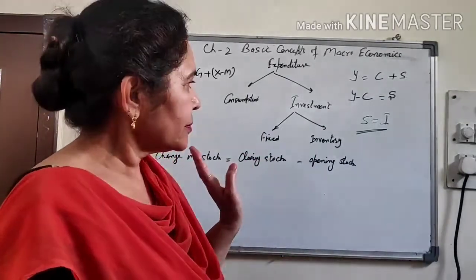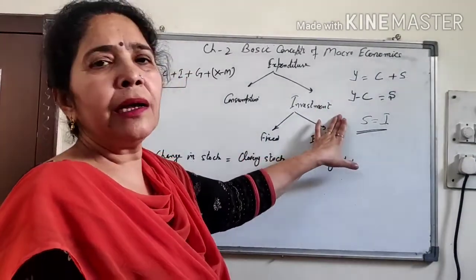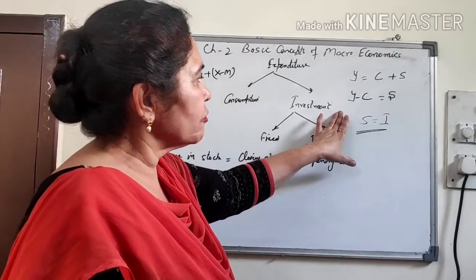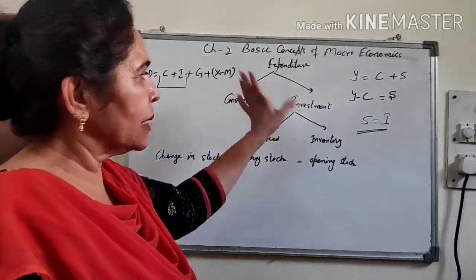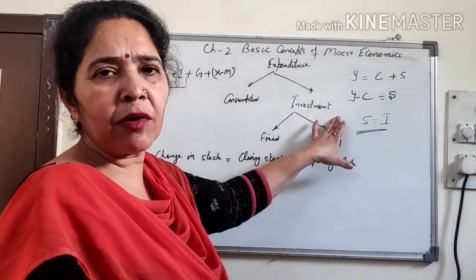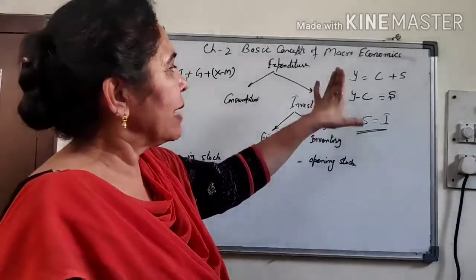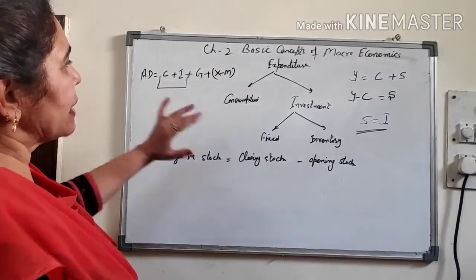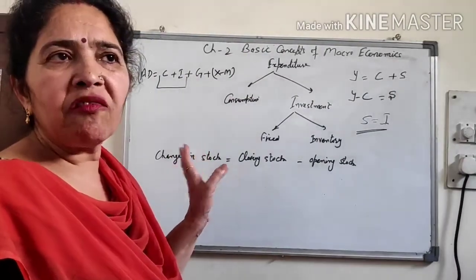Investment uses the four factors of production — land, labour, capital — for the production process. This helps increase people's income in the future, raises the level of employment, and in turn increases the level of income, which increases the aggregate demand of the economy. This cycle helps in the development of an economy.